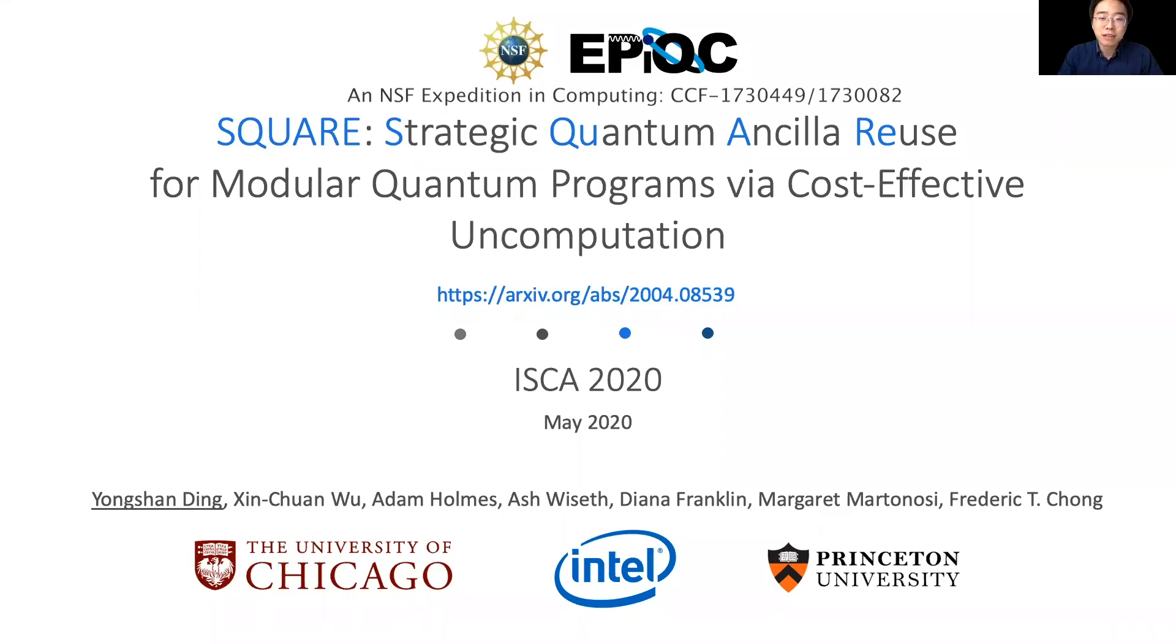Hello, my name is Yongshan Ding. In this video, I'm going to introduce our recent quantum compiling software called Square, short for Strategic Quantum Ancilla Reuse. This is a joint work with my colleagues at UChicago, Intel, and Princeton.